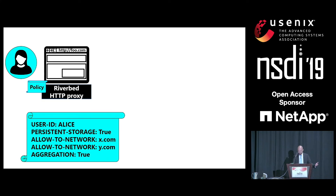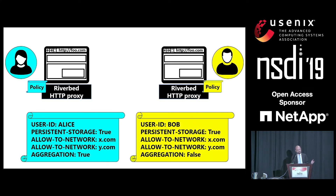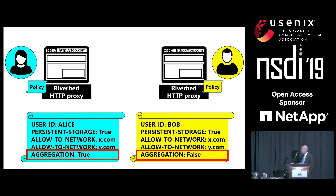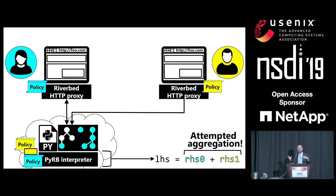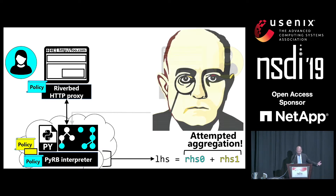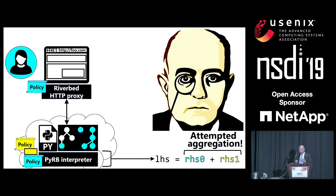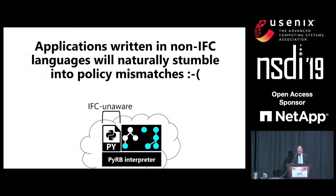Imagine we have Alice with her policy. Now imagine Bob wants to use the same service. Alice and Bob's policies are the same except for one crucial detail: Alice allows her data to be aggregated, but Bob does not. What happens if Bob sends data to the service? What could happen is an attempted aggregation where two right-hand sides with different policies are combined. If this happened, Riverbed would have to kill the application, because otherwise Bob's policy would be violated. The problem is that applications written in non-IFC languages will naturally stumble into such policy mismatches, because these applications are totally unaware of policy semantics.